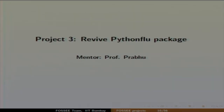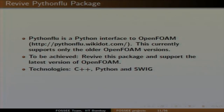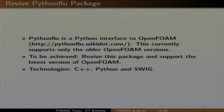The third project is to revive the Python flu package. Python flu is a Python module which you can use to interact with OpenFOAM. OpenFOAM is a computational fluid dynamics software, and using Python flu you can interface with it. The problem is that Python flu supports only older versions of OpenFOAM. We need to revive this package and support the latest version of OpenFOAM. For this, you should have very good knowledge of C++, Python, and some knowledge of SWIG.